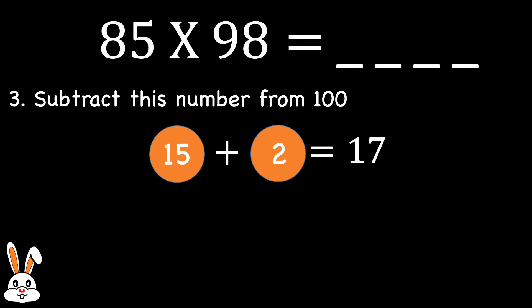For step number 3, we subtract this value 17 from 100 and we get 83. This gives us the first part of the result. So the first two digits of the solution should be 83.